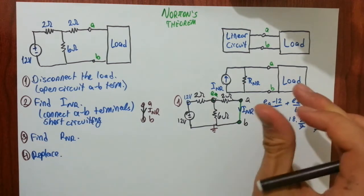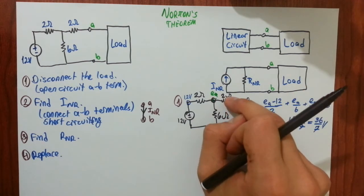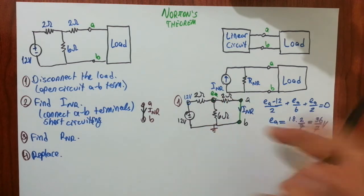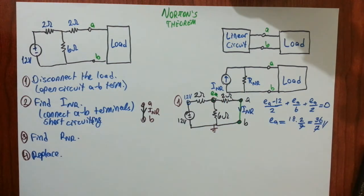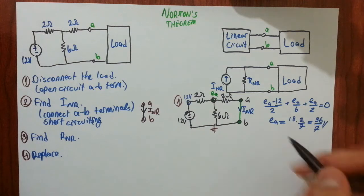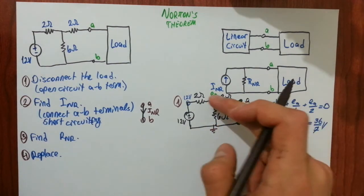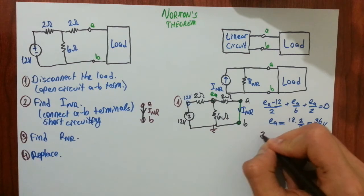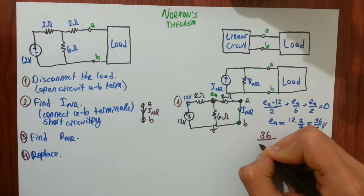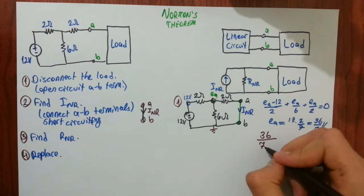We have found Ea. And naturally current will flow in this direction. So after finding this current that will automatically equal to INR. What is that current? That's very easy to find. We will divide voltage difference across that resistor by resistance.